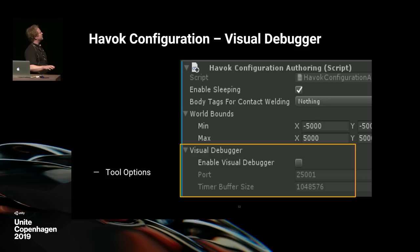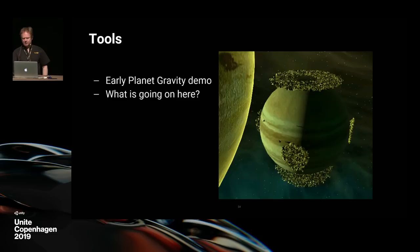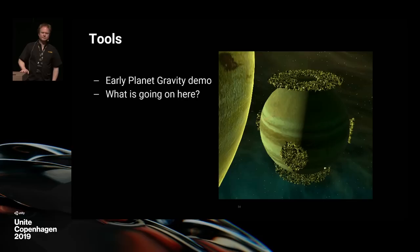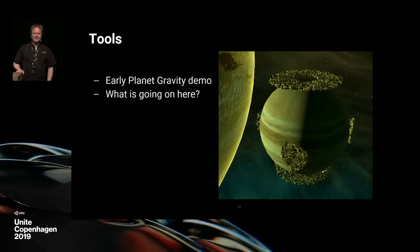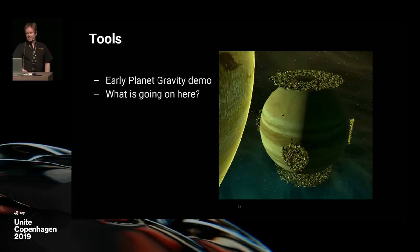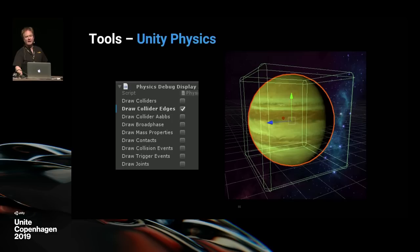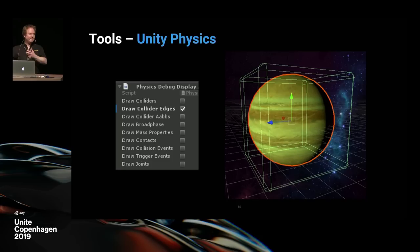I want to touch on something in the Havoc Physics plugin — an option for a much more detailed investigation tool. This was an early version of the Planet Gravity demo where something went wrong. The main problem was that the planet accidentally had a box shape instead of a sphere. If you're only looking at the graphics, you'd start looking at center of mass and where forces are being applied. But with the physics debug display option — which we do need to make faster — you just turn it on and immediately see what the problem is visually.